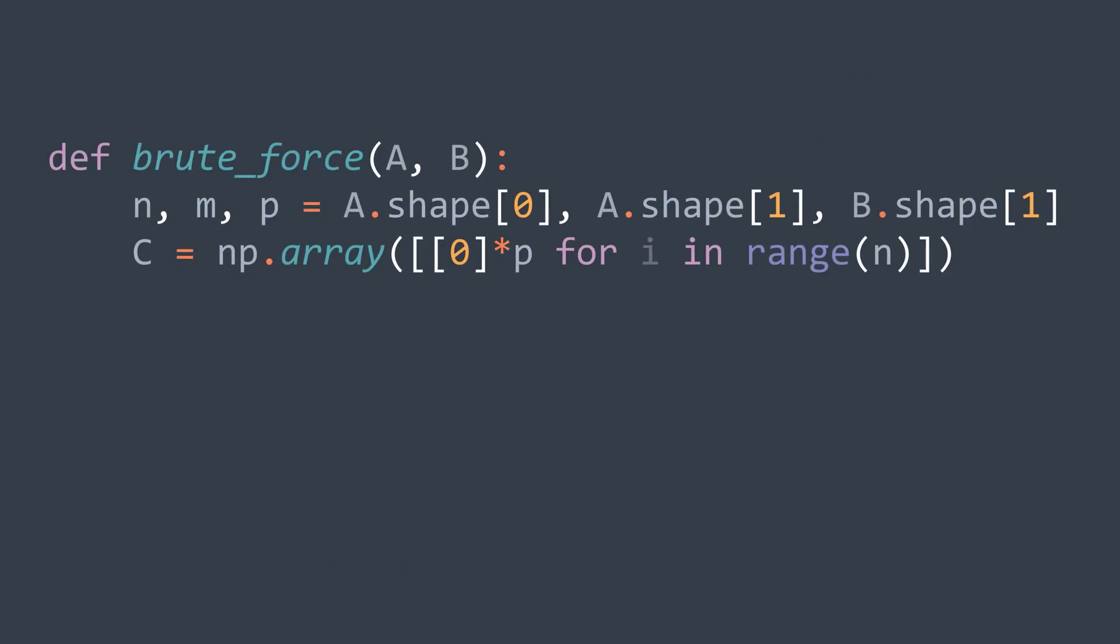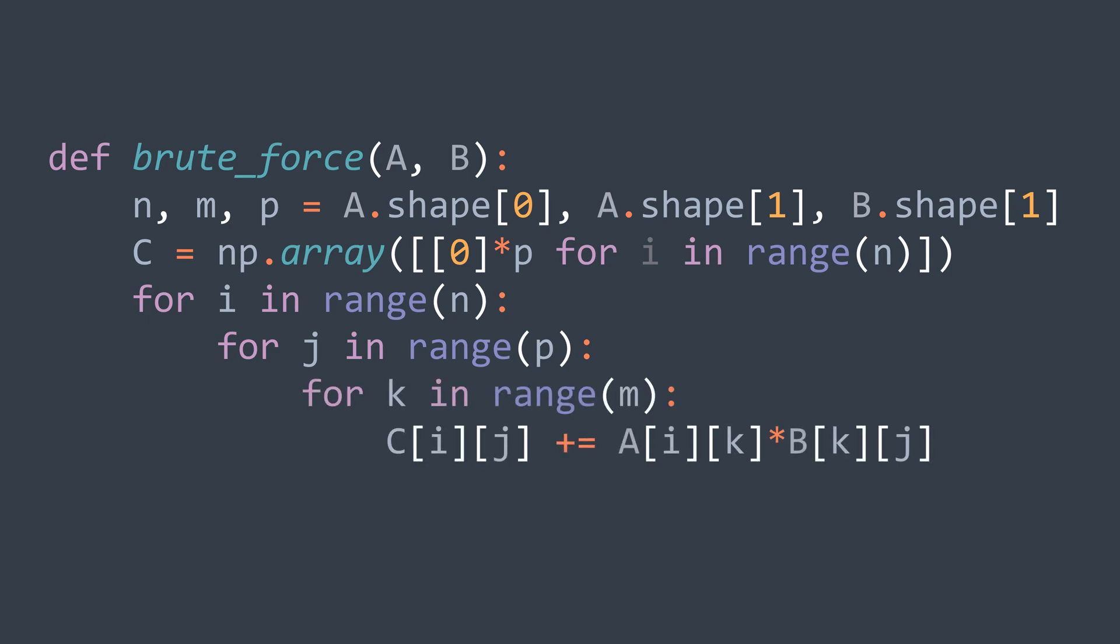Now we create the matrix of n rows and p columns, it represents our product. Then for each cell i,j in C, we want the sum of a_ik times b_kj. So for each k from zero to m, we add a_ik times b_kj. After the loop we'll return C, our product.